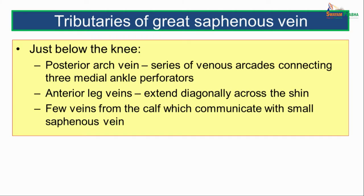Going on to the tributaries of the great saphenous vein. Just below the knee: the posterior arch vein, seen as a series of venous arcades connecting the three medial ankle perforators and draining into the great saphenous vein. Next are the anterior leg veins, which extend diagonally across the shin and drain into the great saphenous vein. Also, a few veins from the calf which may communicate with the small saphenous vein.